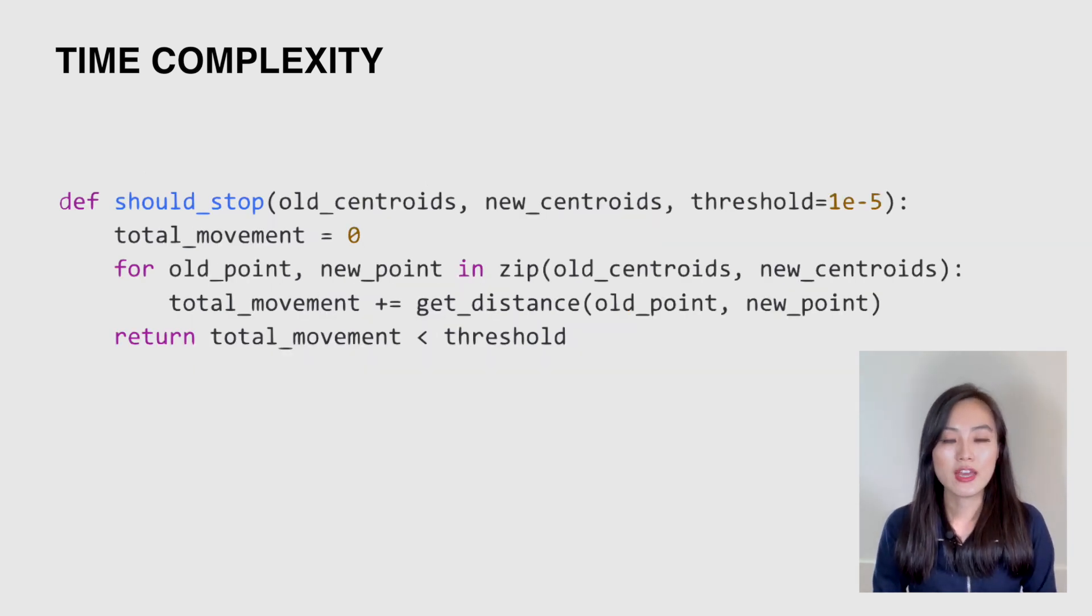The final step is to check if the total movement from old centroids to new centroids is within a certain threshold, and there's only one loop in the function. The time complexity is O(k).